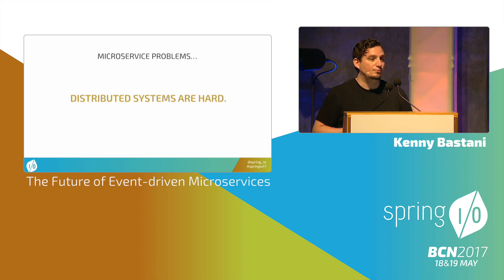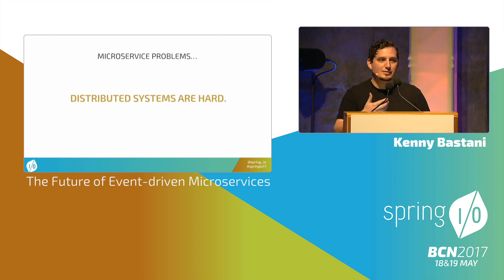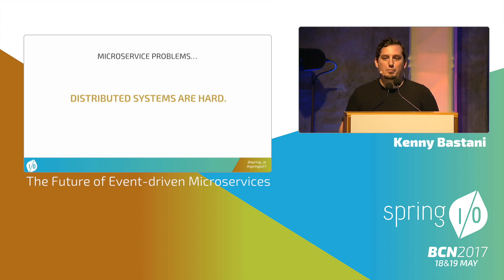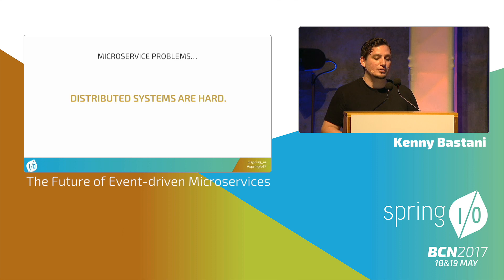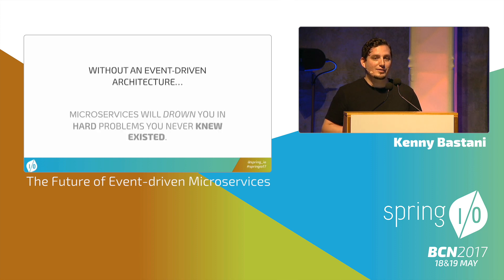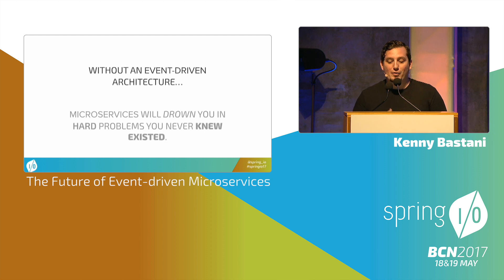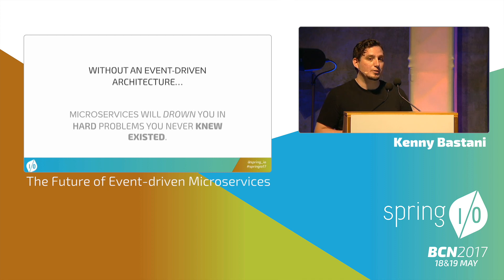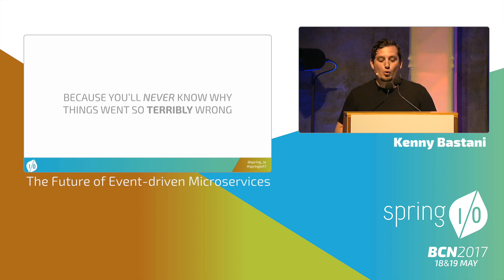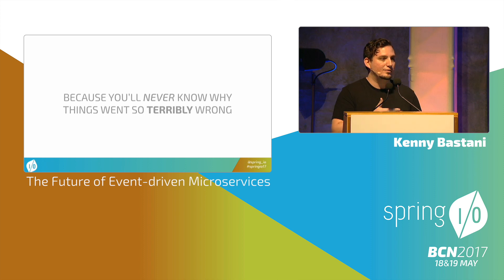Distributed systems are very hard. We've gone from the monolithic application — which was a safe environment, easy to change but not easy to deploy — to a very complex distributed system where a lot of our consistency guarantees change. If you're building a microservice architecture without an event-driven architecture behind it, microservices will eventually drown you in hard problems you never knew existed. If you don't have an audit trail to show how things happened, you can't reason about how to roll back state.